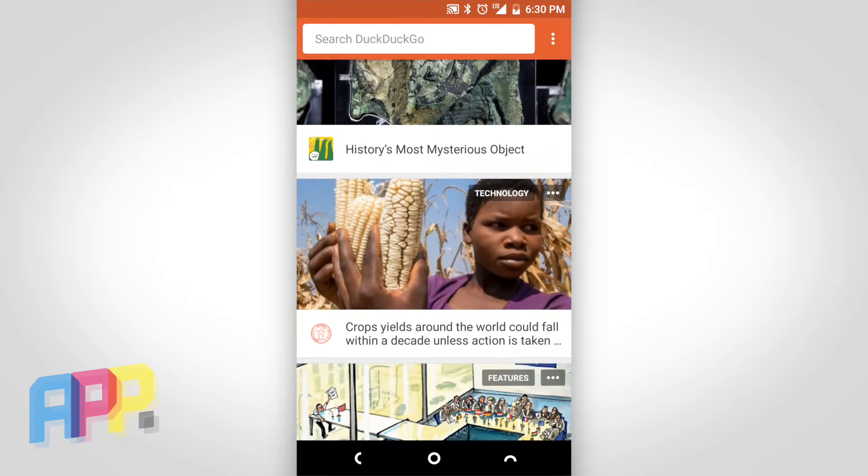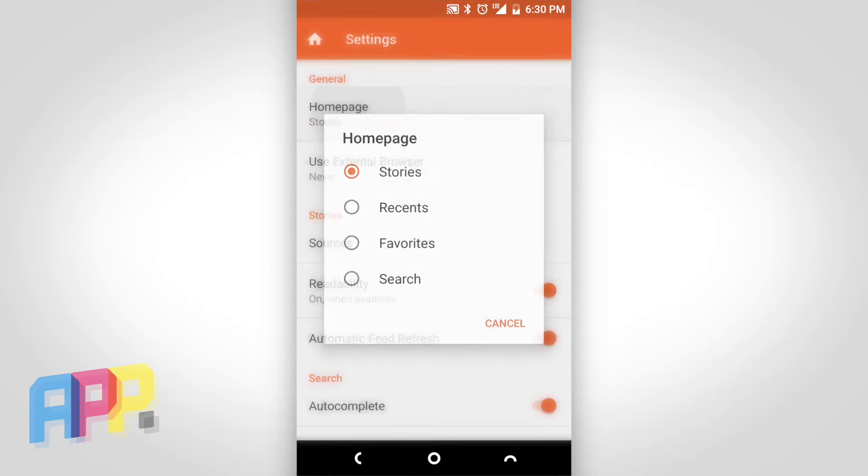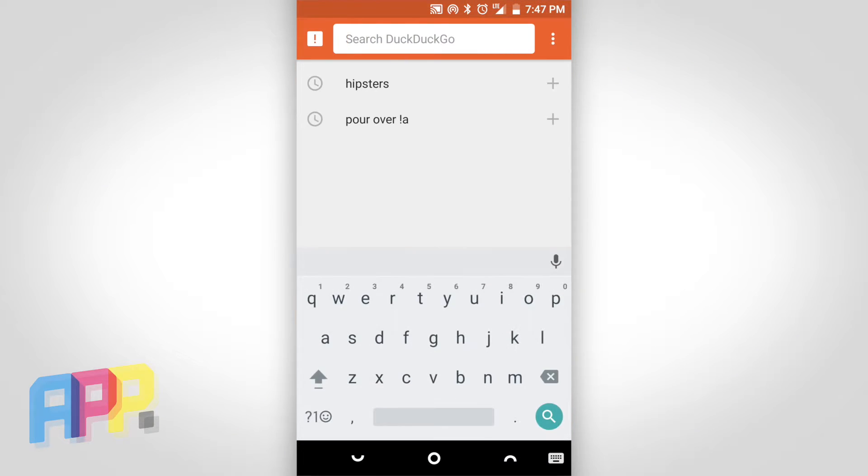DuckDuckGo also features a news feed of trending stories, which can easily be turned off if that's not your jam. There's a search bar widget that can be placed on your home screen for quick access, but you'll need to use an alternate app launcher like Nova if you want to totally replace the Google search bar.